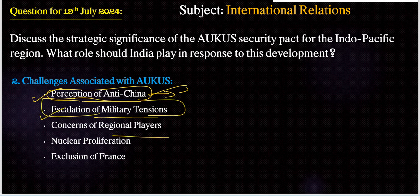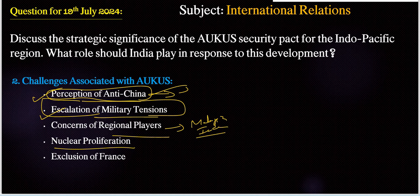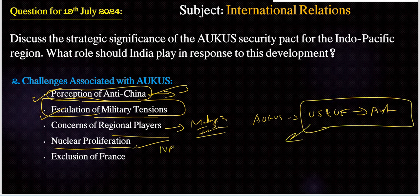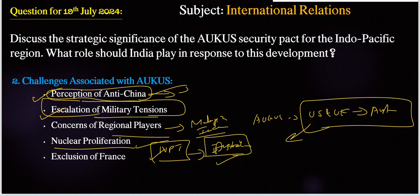Third, concerns of regional players — small countries like Malaysia and Indonesia are opposing or expressing concerns about potential increased militarization and its impact on the region. Fourth, nuclear proliferation — the provision of nuclear-powered submarines to a non-nuclear weapon state raises concerns about nuclear proliferation and conflicts with the NPT (Nuclear Non-Proliferation Treaty). Australia already signed the NPT, yet it is acquiring nuclear submarine technology. That is a very important and conflicting point.